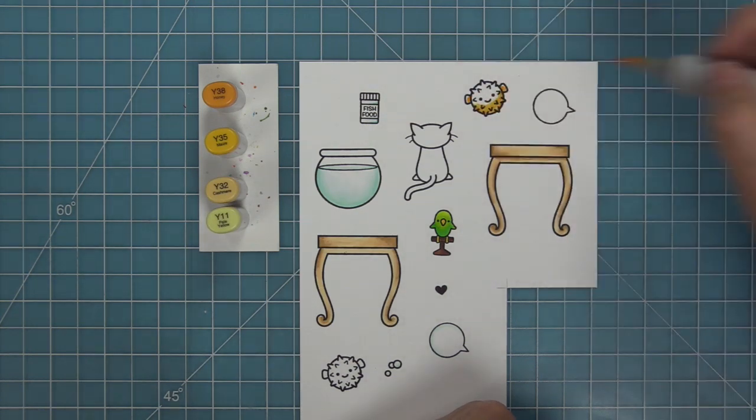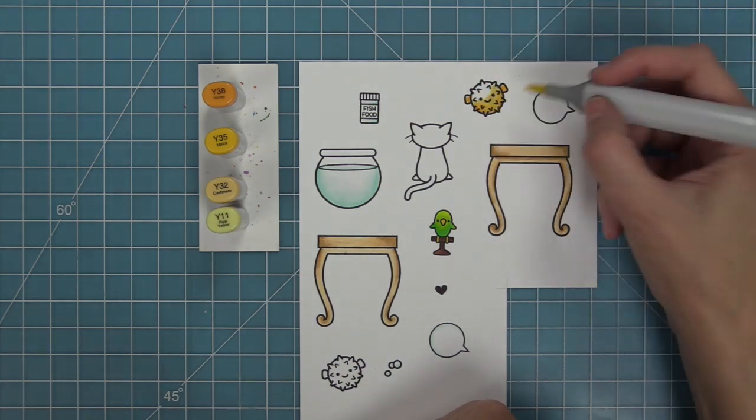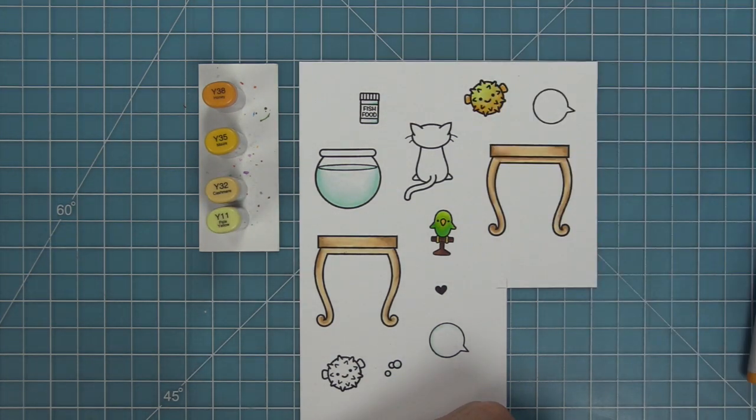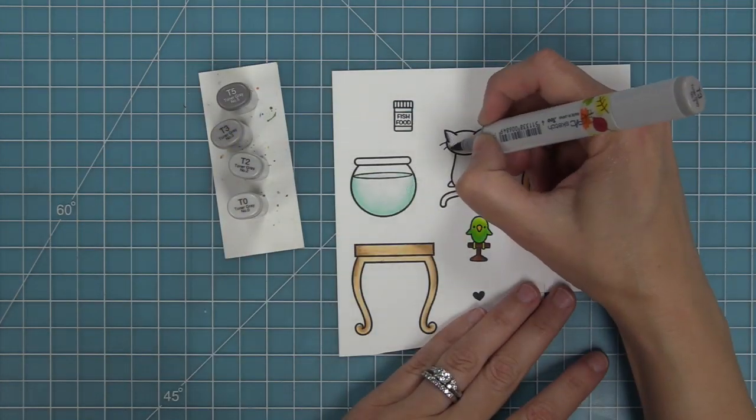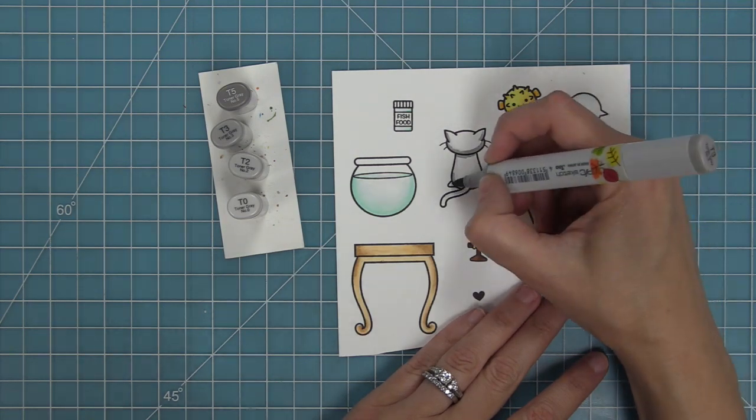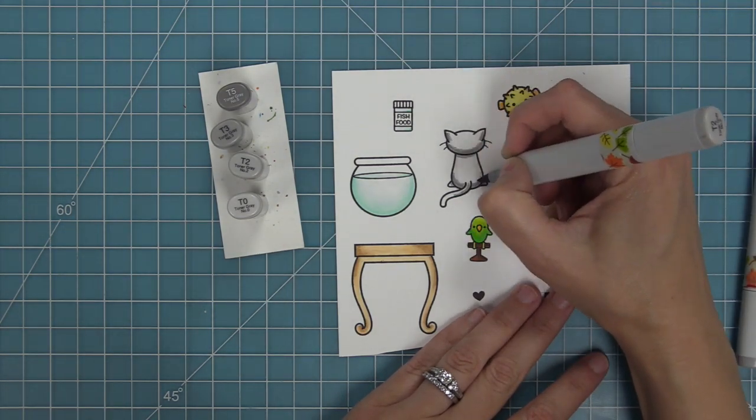This may be one of my favorite stamps of all time, and that's this cute little puffer fish. I'm going to blend it out and I really like putting that neon Y11 yellow at the top. I think it gives him just a bunch of cool pizzazz and pop on the card.